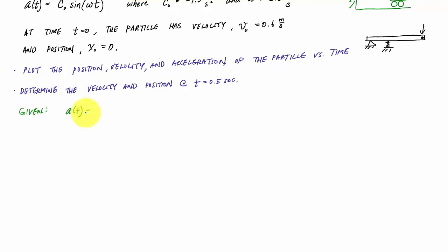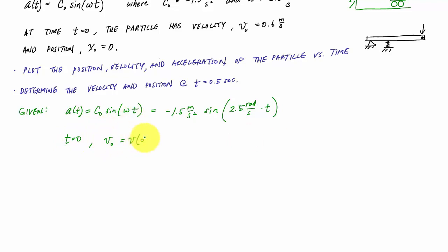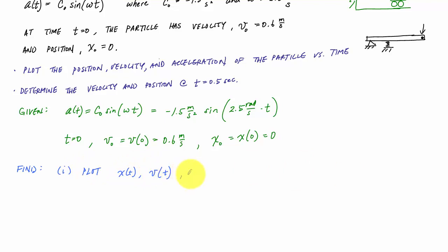In this problem, here's what we're given. The acceleration is a function of time: a(t) = -1.5 sin(2.5t) meters per second squared. The initial conditions are: at t = 0, initial velocity v₀ = 0.6 meters per second, and initial position x₀ = 0. What we'd like to find is position as a function of time and velocity as a function of time — we already have the acceleration function. We can use Excel, MATLAB, MathCAD, or whatever you want. We also want the velocity and position specifically when t = 0.5 seconds.